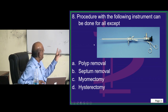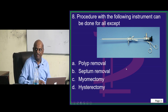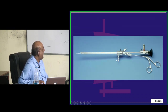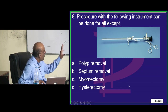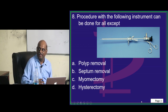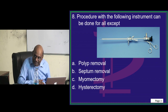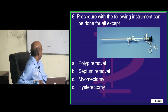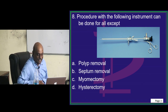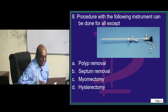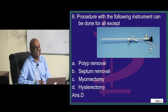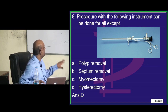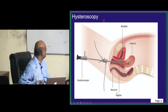Question 8: a procedure with the following instrument can be done for all of the following except — what is this instrument? It is a hysteroscope. Madhusri correctly says you cannot do a hysterectomy with a hysteroscope. Myomectomy, septum removal, and polyp removal can all be done. Very good — this is how a hysteroscope is passed to visualize the uterus.